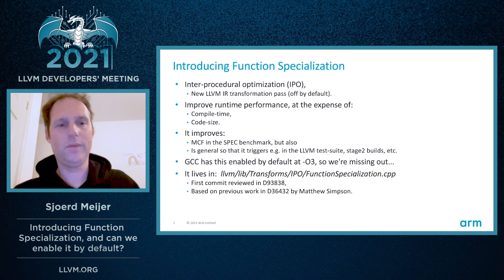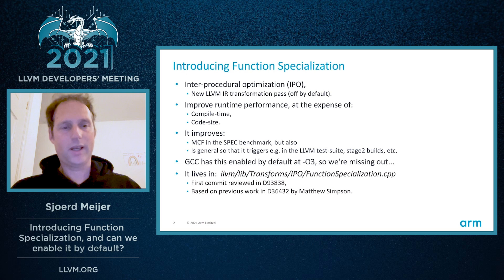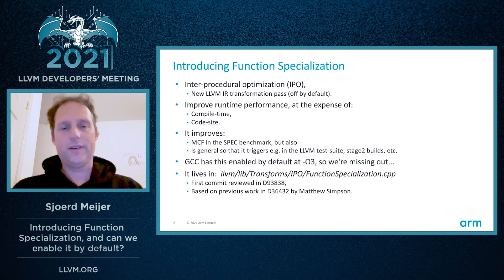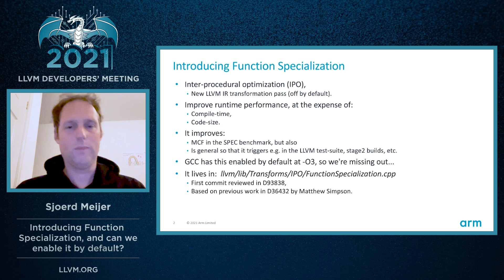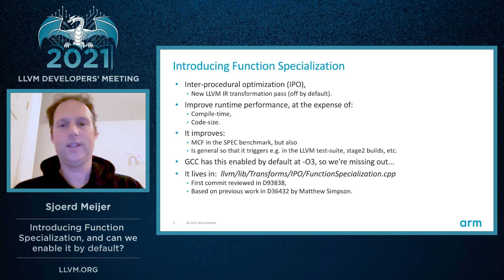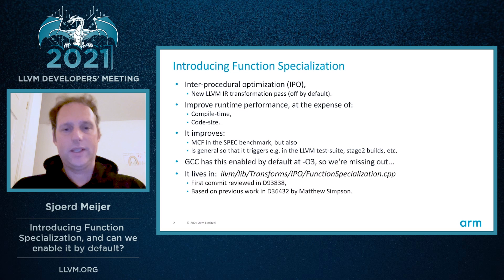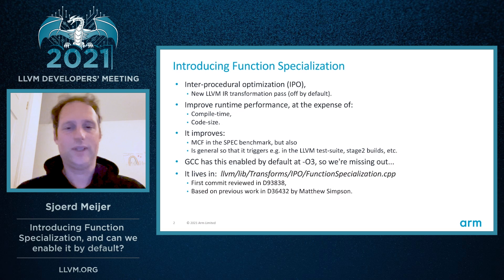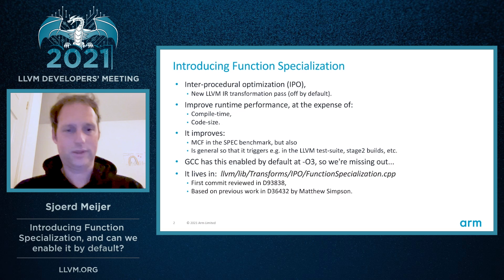What we'd like to achieve is to improve the SPEC benchmark — that's a CPU benchmark — and the MCF application in particular, but it's a very generic optimization, so it triggers in quite a lot of code bases: the LLVM test suite, Stage 2 builds, and more. GCC has this enabled by default at optimization level O3, so this regularly comes up as a difference between Clang and GCC — we're missing out on something.